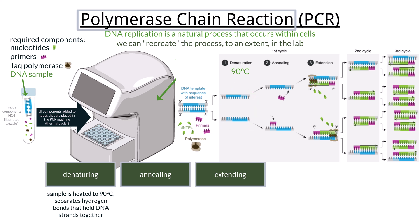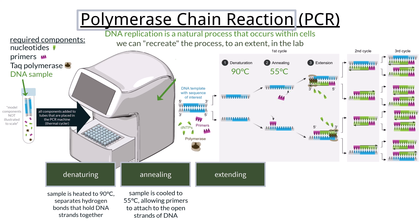With the DNA strand separated, the bases are now freely exposed. Next, for the annealing phase, the sample is cooled down to around 55 degrees Celsius, which allows the primers to connect to the DNA sample. The primer is specifically chosen beforehand to amplify a desired piece of the DNA, usually around 100 base pairs in length. Then for elongation, the last phase, the sample is heated to 75 degrees Celsius, which allows the Taq polymerase to attach to the primer and then move along the strand attaching the free-floating nucleotides.